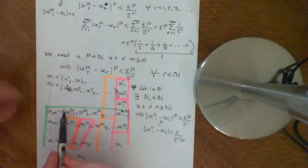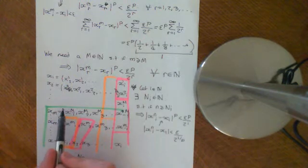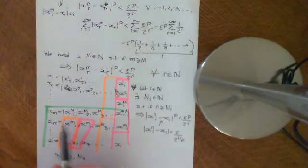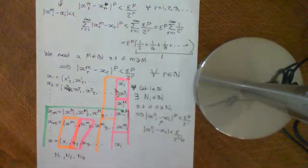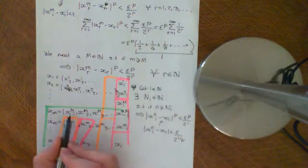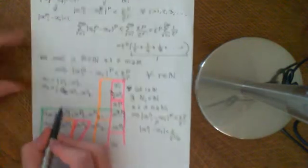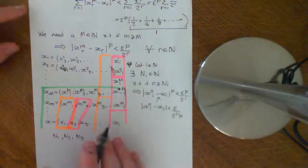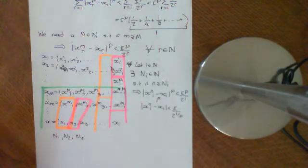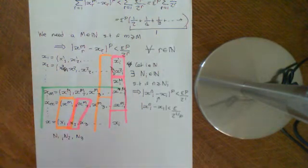It will hold that if you go beyond n1, if you pick any term in the first termwise sequence beyond x_n1,1, so x_n1,1 will be somewhere in this first termwise sequence, if you pick any point beyond it, then I can get the distance between it and the first term of this termwise limit sequence will be less than epsilon.